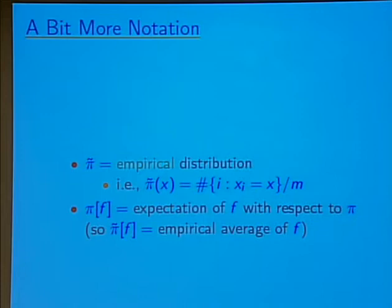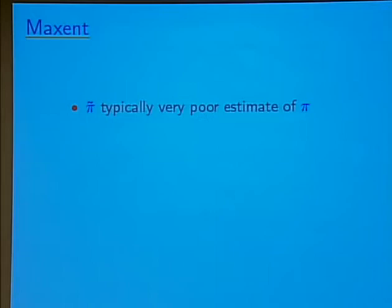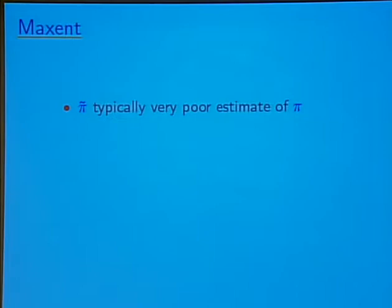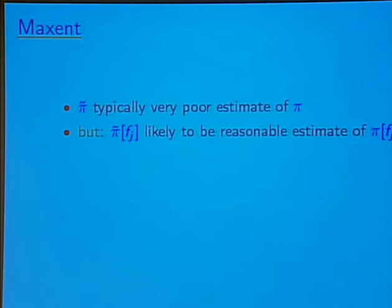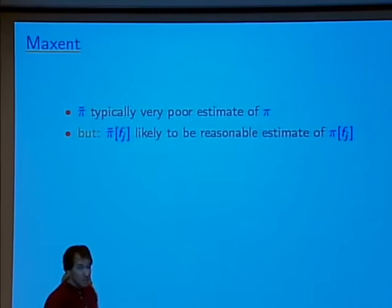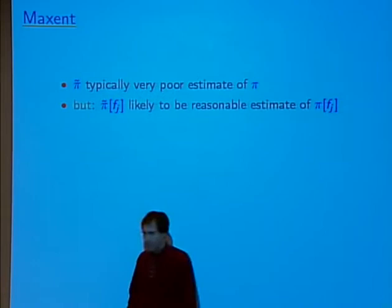That's the setup. The goal is to infer an estimate of the distribution pi. The first naive idea you might have is to just use the empirical distribution itself as an estimate of pi. But we're dealing with a space of 10,000 or 100,000 points and only have 20 to 100 samples. So this is going to be an awful estimate — it'll give zero probability to practically every point in the space.